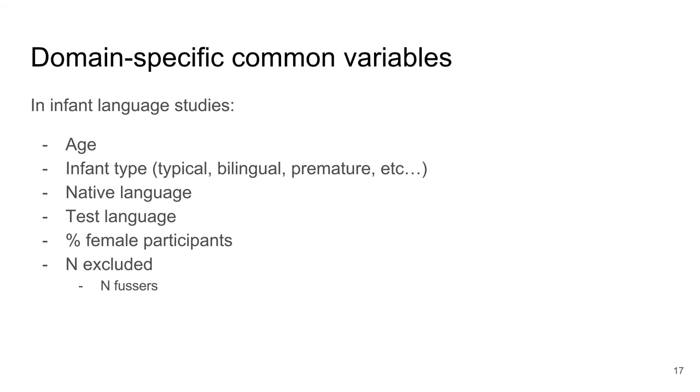In MetaLab meta-analyses are grouped by domain. One example is infant language acquisition. For the purpose of meta meta-analysis within such domains we also want to compare possible moderators. These are variables that might influence the outcome across specific research topics. Obvious candidates are native language and infant age and whether the infants tested are part of a specific population that is bilingual infants.